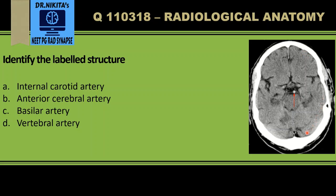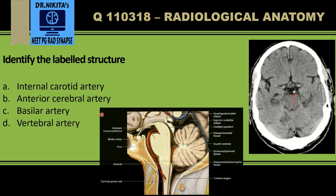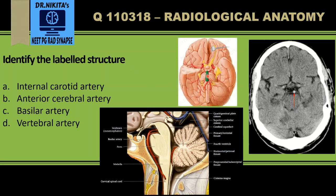Here we have a CT scan of the brain and we have to identify the labeled structure. This is one of the vessels, as we know from the options. Looking at the anatomy, the vessel which runs in front of the pons is the basilar artery. On the cross section, that is the pons, and in front of the pons is the basilar artery, formed by the fusion of two vertebral arteries.